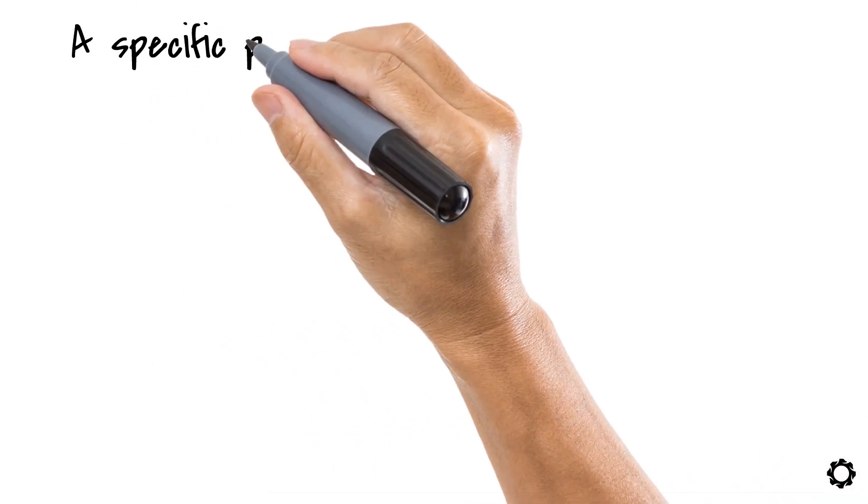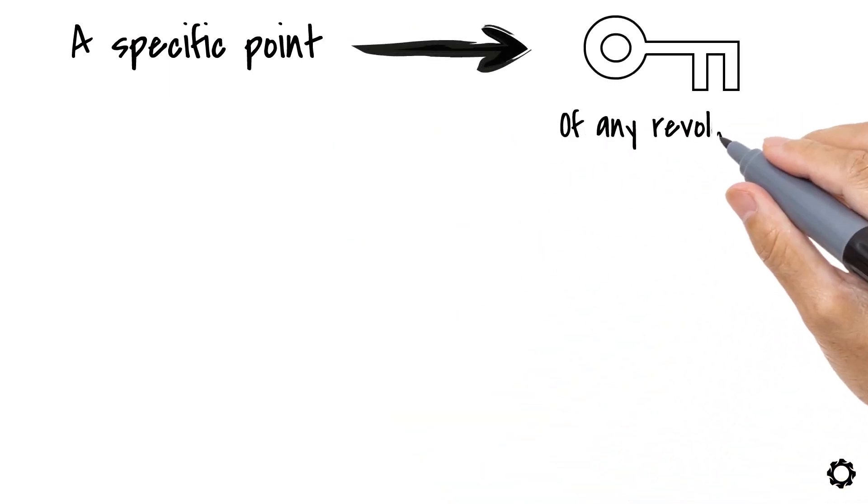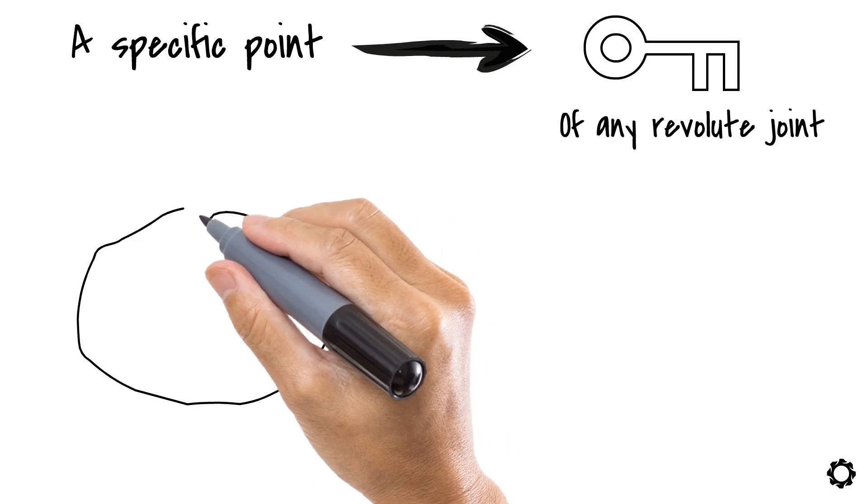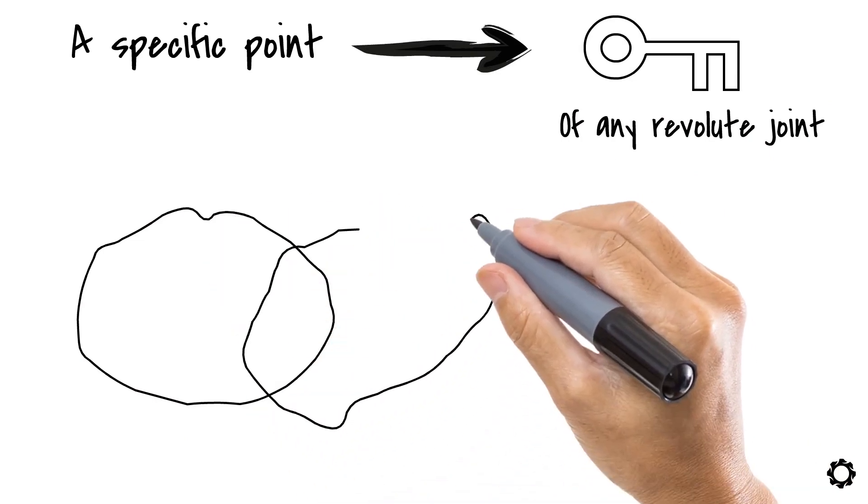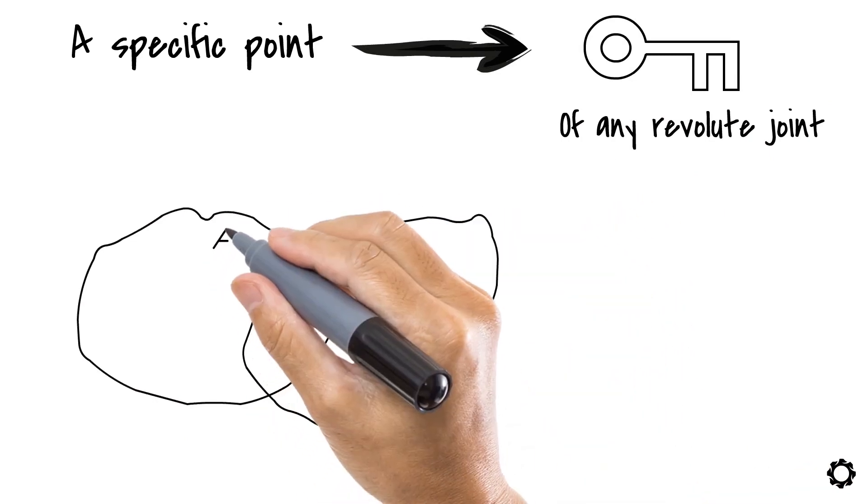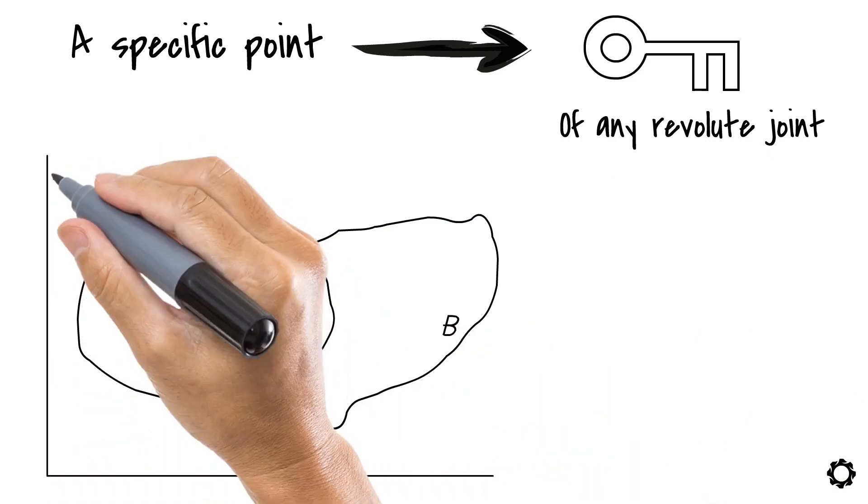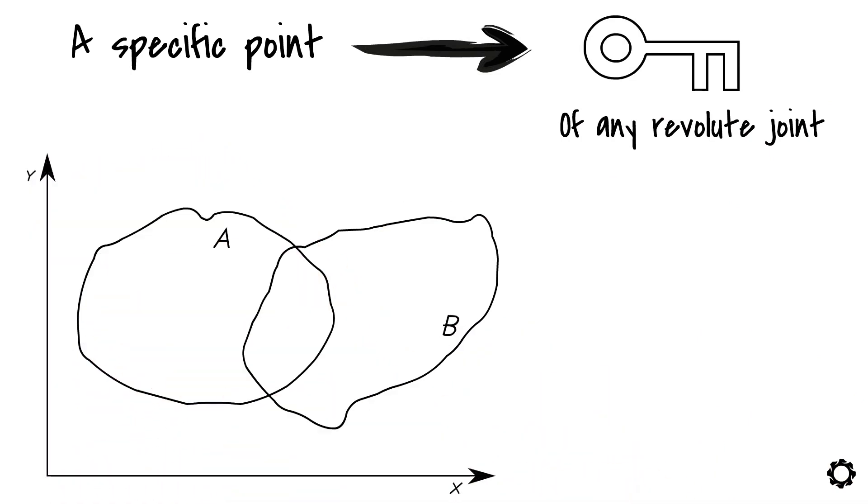We said that a specific point was a key element of any revolute joint. Let's say that we have two bodies, and we superimpose them or overlap them. We have body A and body B. Now we need a reference system with axis x and y to relate all the vectors we will need.